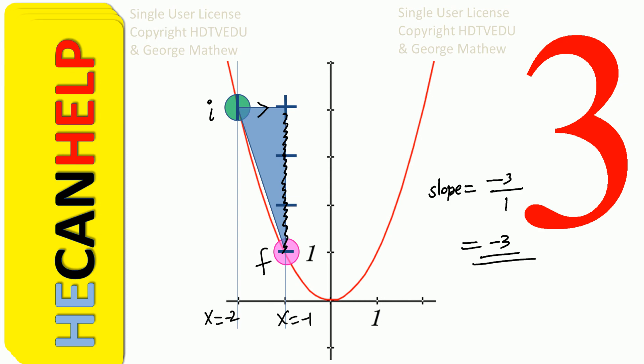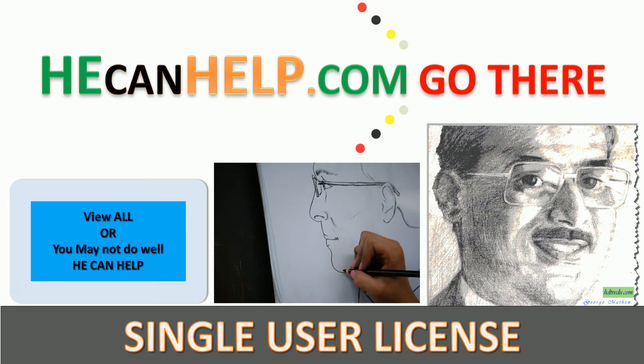So when we go from X equals negative 2 to X equals negative 1, our slope is negative, and the average rate of change of the function is negative 3. This is George Matthew, always wishing you well at hecanhelp.com. Good luck.